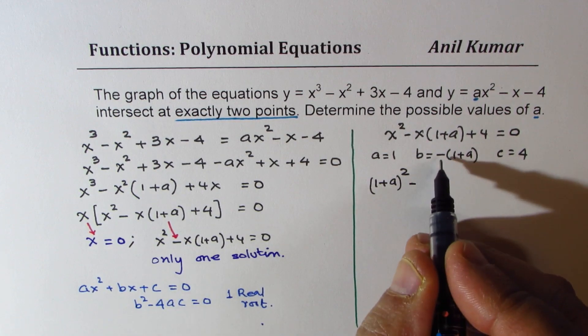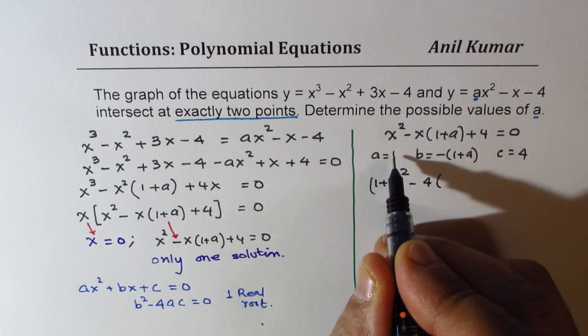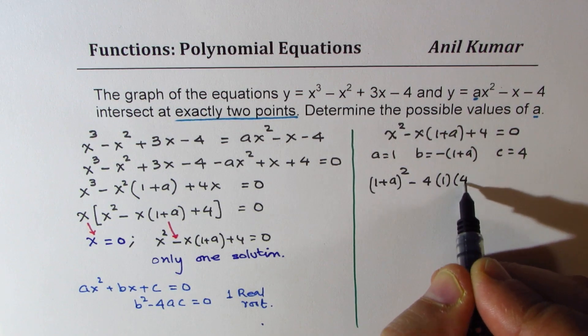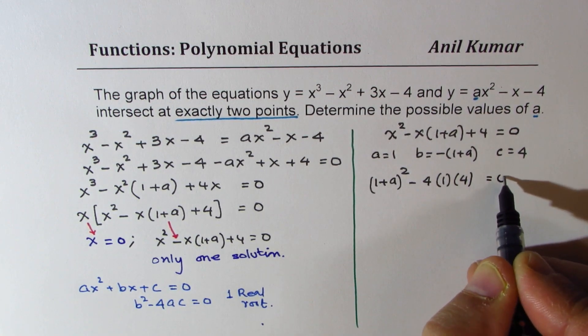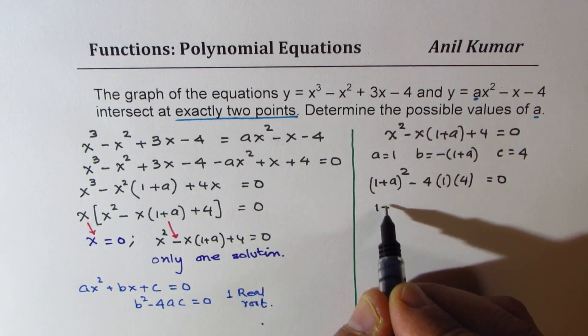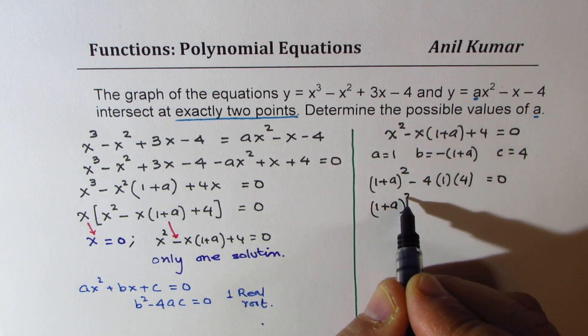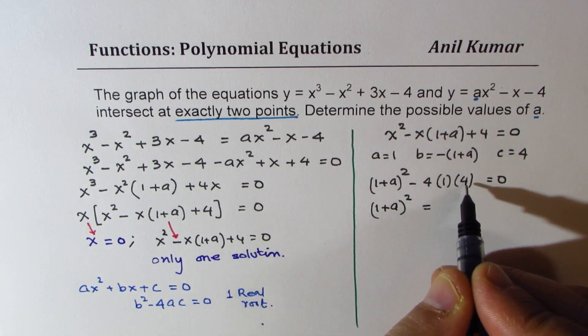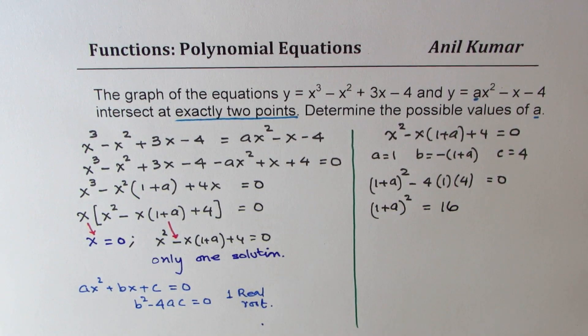Minus, because negative becomes positive, right? 4 times a is 1 and c is 4, should be equal to 0. So we get 1 plus a whole squared should be equal to 4 times 4 is 16.